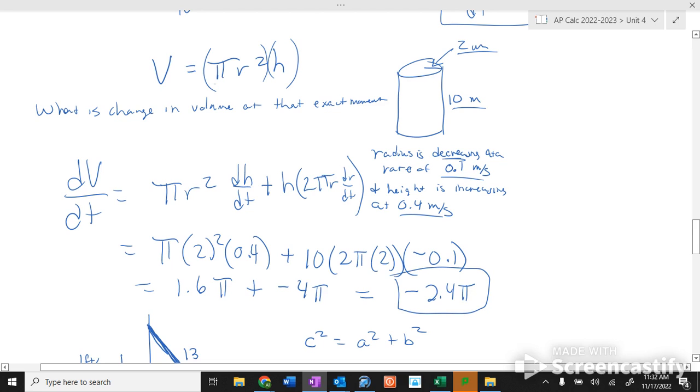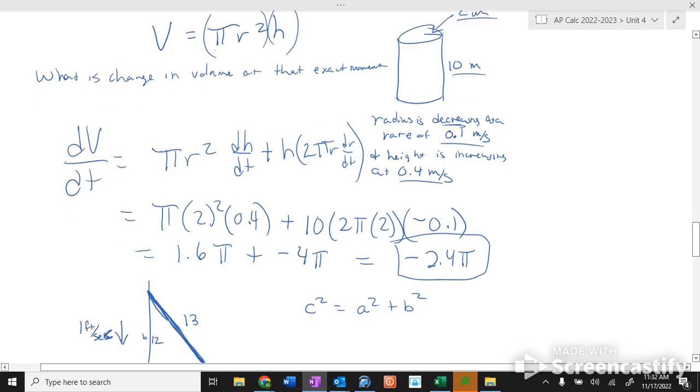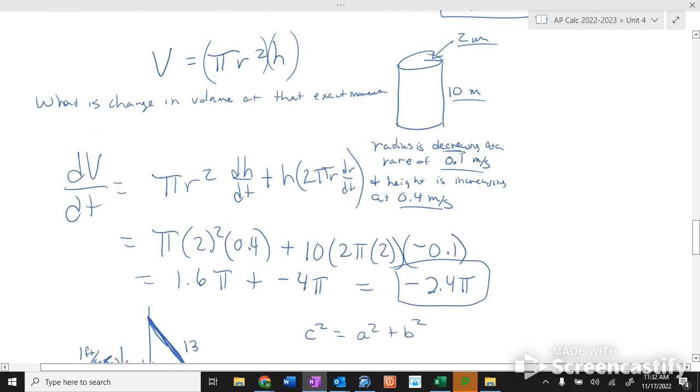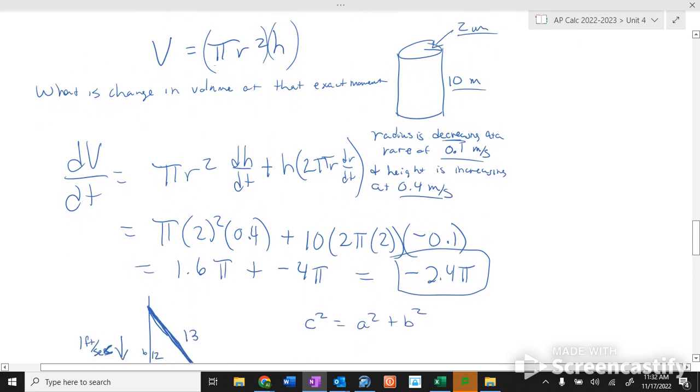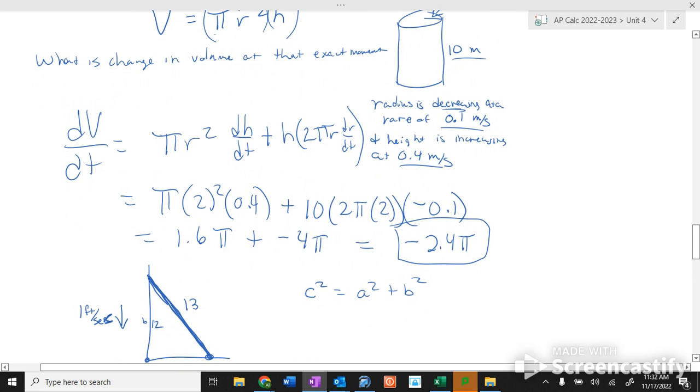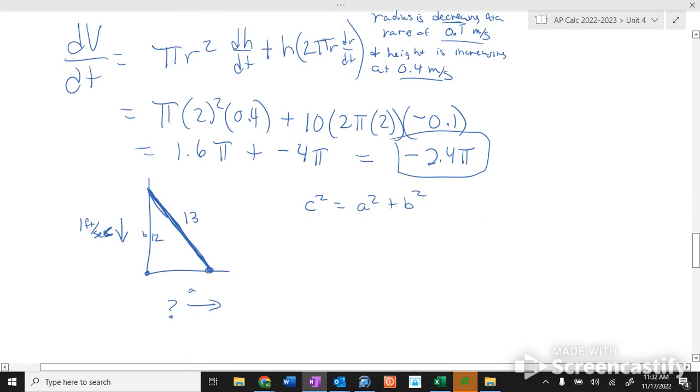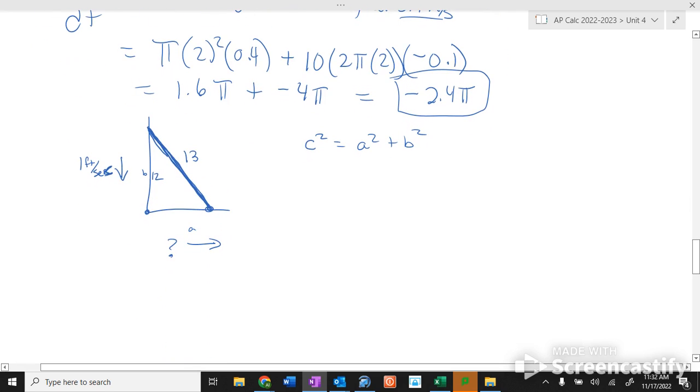Which is probably impossible but you know, hey, that's what happens when Mr. Birchbach makes up some random problem. The change in volume, you can have a negative change in volume. You just can't have a negative volume. You can have a negative change in volume. So negative 2.4 pi works.